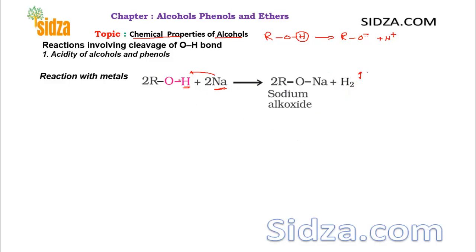The bond breaking occurs over here, between the O-H bond. Take an example: suppose we have C₂H₅CH₂OH. When we react it with sodium metal, the sodium loses an electron, the hydrogen picks it up, and two hydrogen atoms combine to form hydrogen gas H₂.